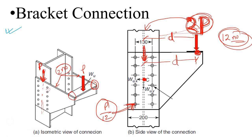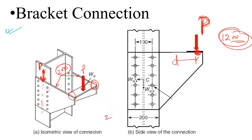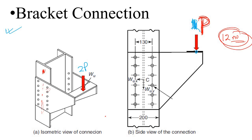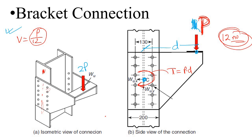However, the load P is applied at a distance d from the centerline of the bolt group. Due to this eccentricity, a torsion T = P × d is generated at the centroid. So in addition to the direct shear of P/12 per bolt, each bolt also experiences additional shear force due to this torsion.